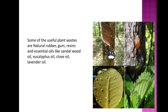So this is how excretion in plants takes place — by the removal of gases such as oxygen, removal of excess water through transpiration, and excretion of useful plant waste products such as resins, gums, and so on.